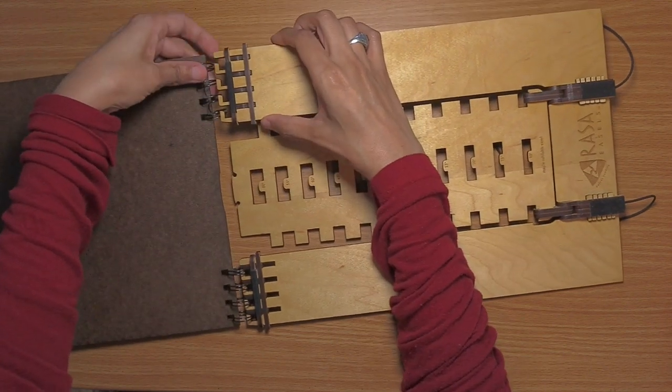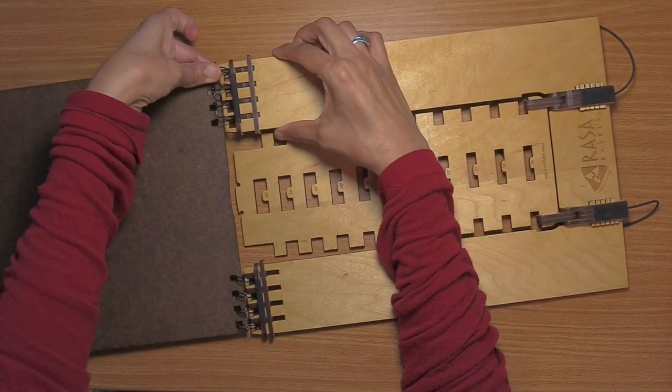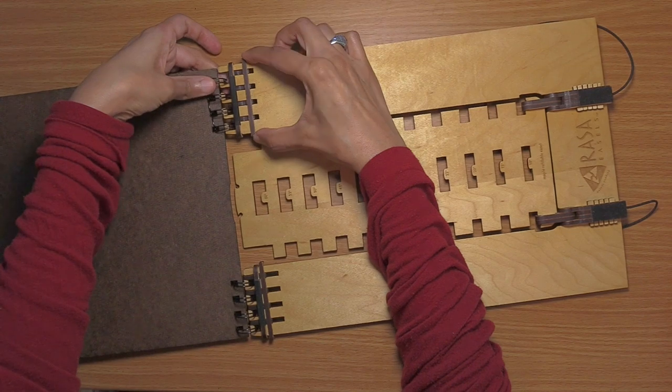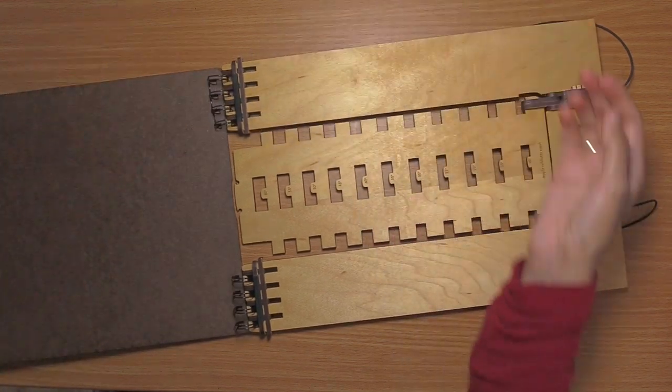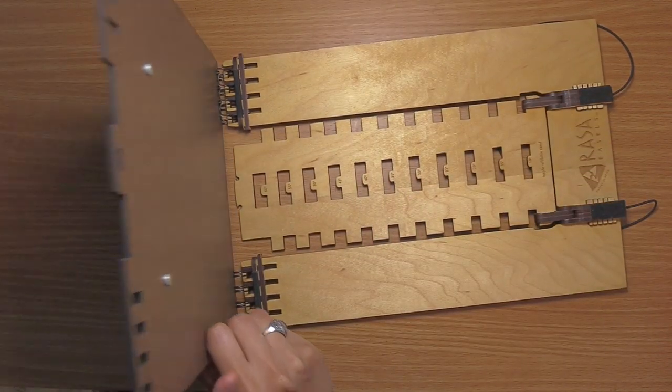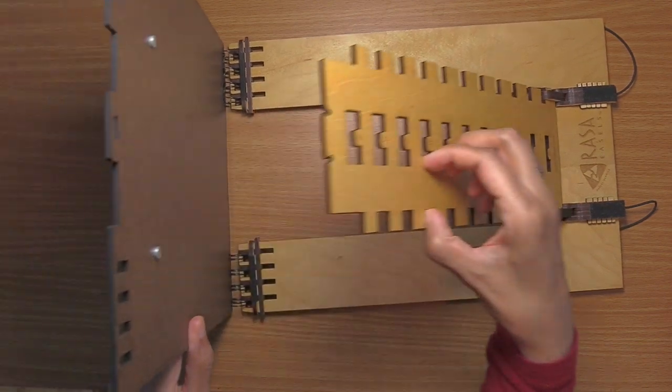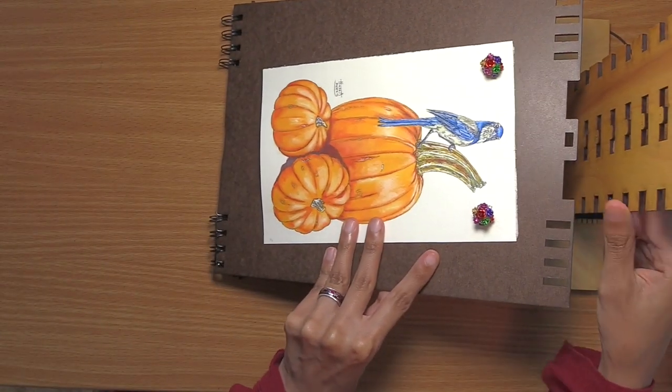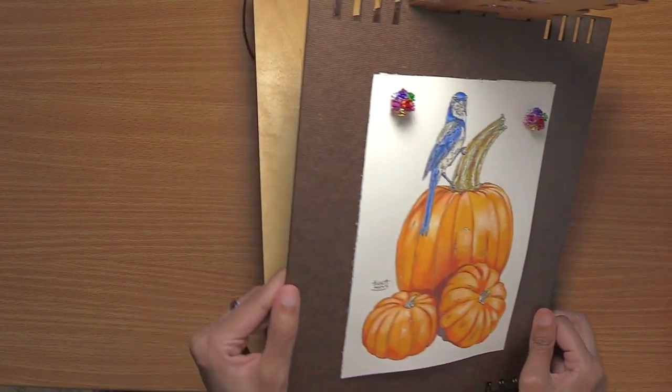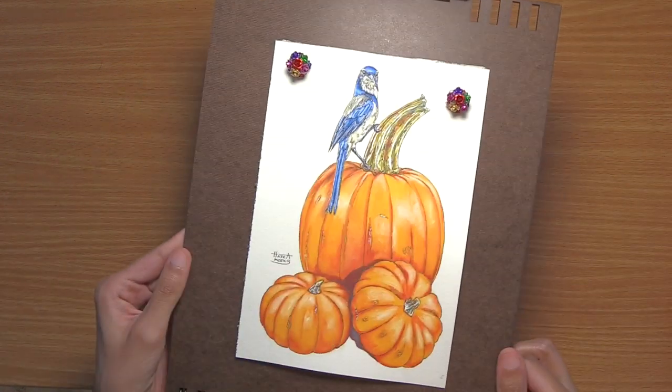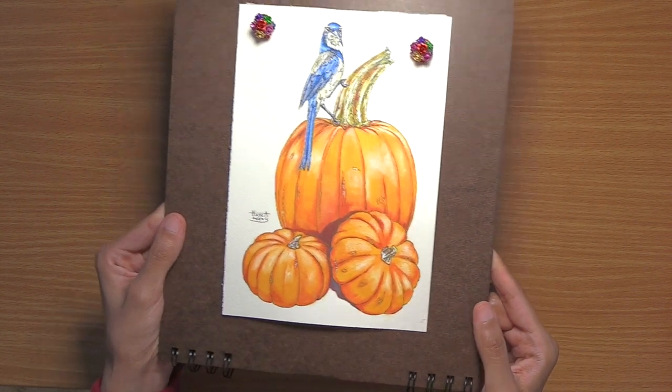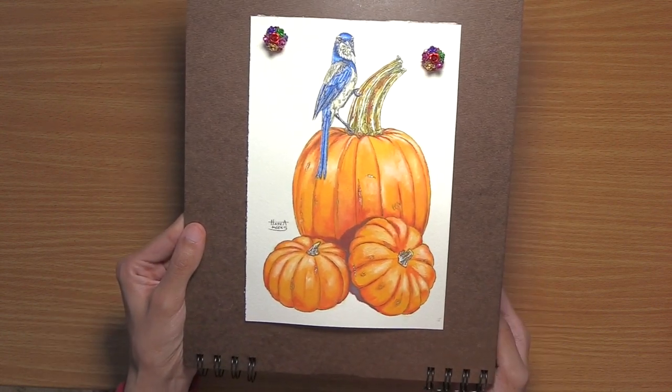Pop this back in. Very fast and easy. Okay. And now I've got this available. Let's put it at a low angle so you guys can see it a little bit better. Now I can put any paper that I want at any angle and that would work great. So you can see just how lovely that is to be able to paint on there at any angle.